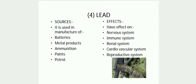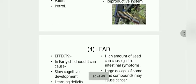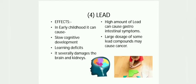Sources of lead are batteries, paints, etc. Lead can affect the nervous system, immune system, and renal system. Lead can also cause slow cognitive development in children and cancers.